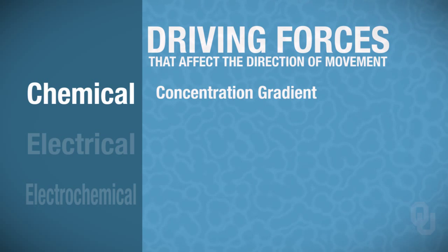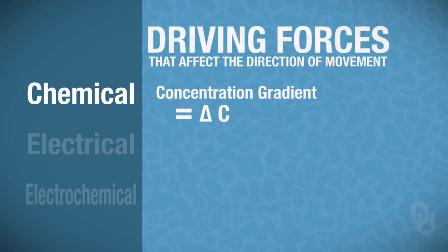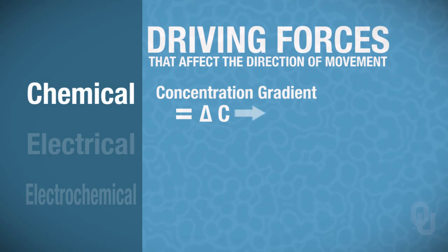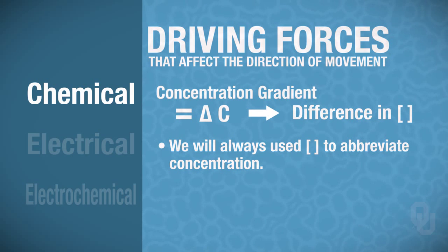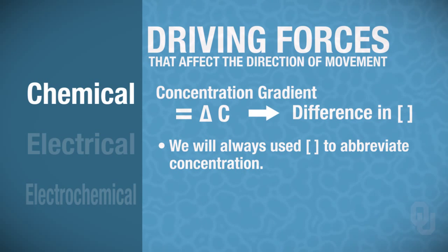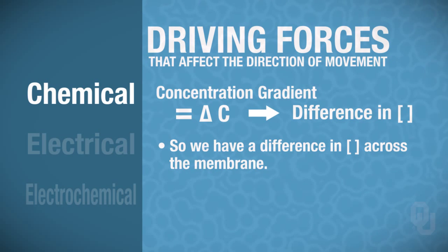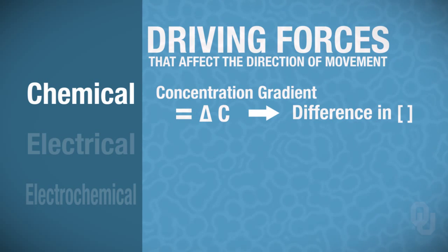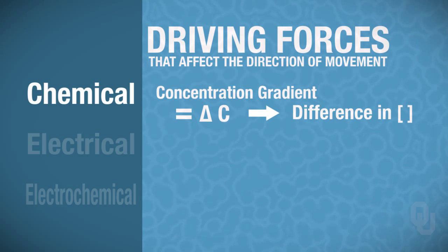We're going to abbreviate concentration gradient with a change in C (ΔC). What we mean by a change in C is that there's a difference in concentration—we always use brackets to abbreviate concentration—so we have a difference in concentration across the membrane. This is just a brief introduction to what a chemical gradient is; we'll get into more detail in just a moment.